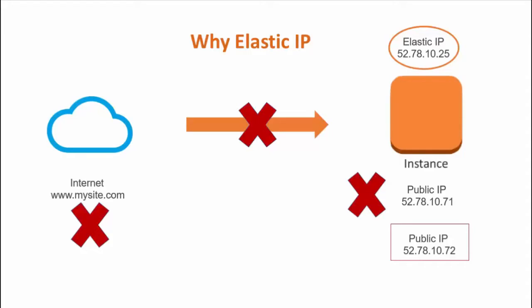This is just one of the examples. There are a lot of reasons why one would want to have an elastic or static IP. So let's take a look at how we can actually do this using the AWS console.